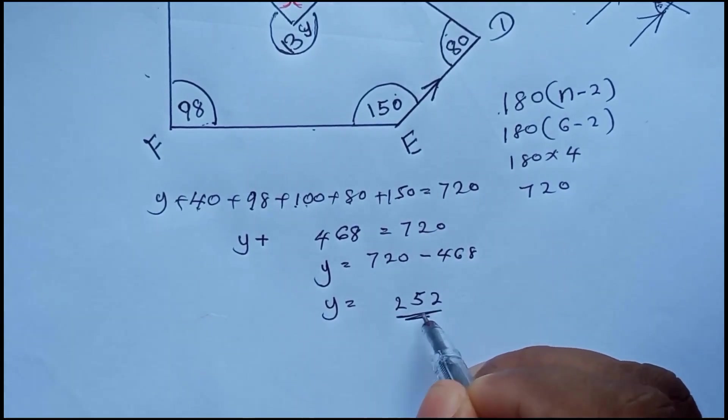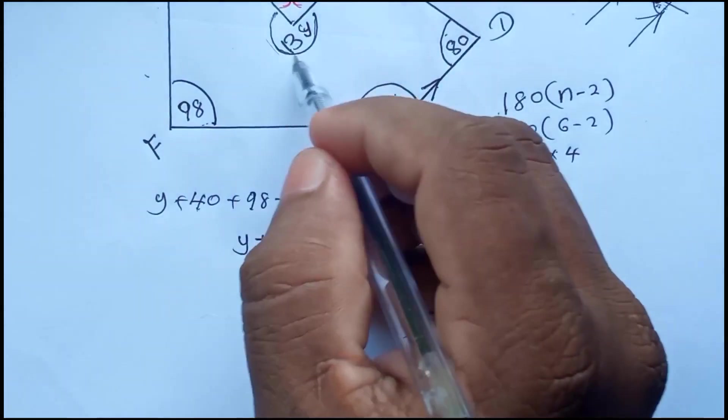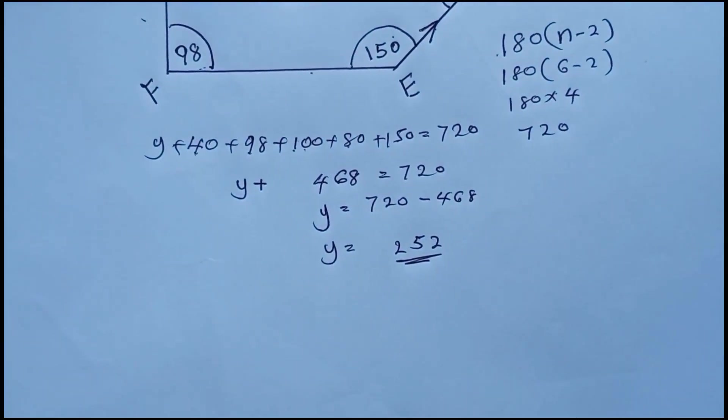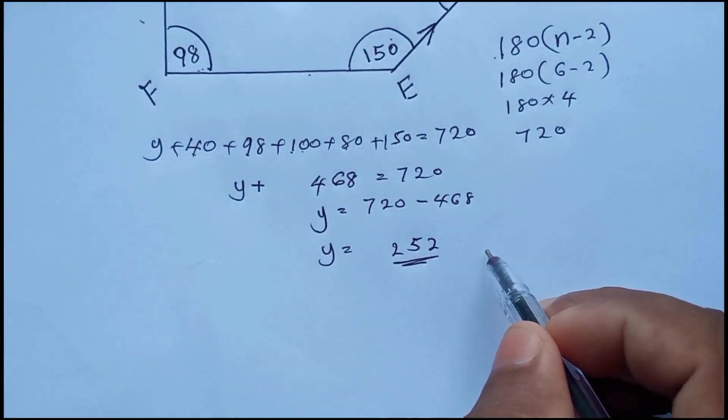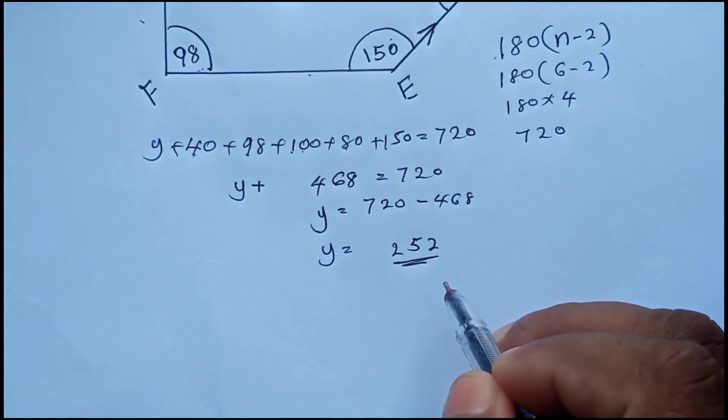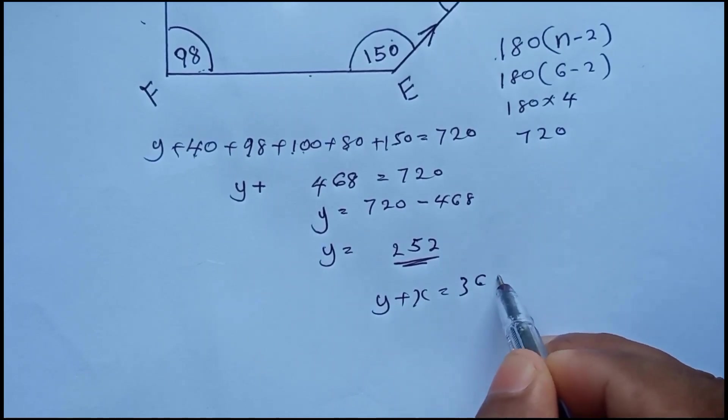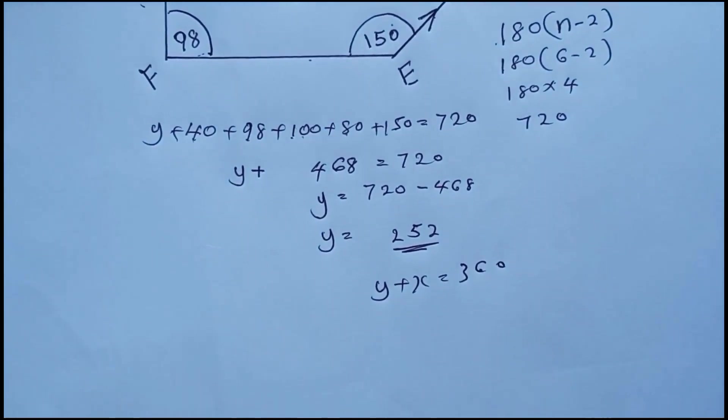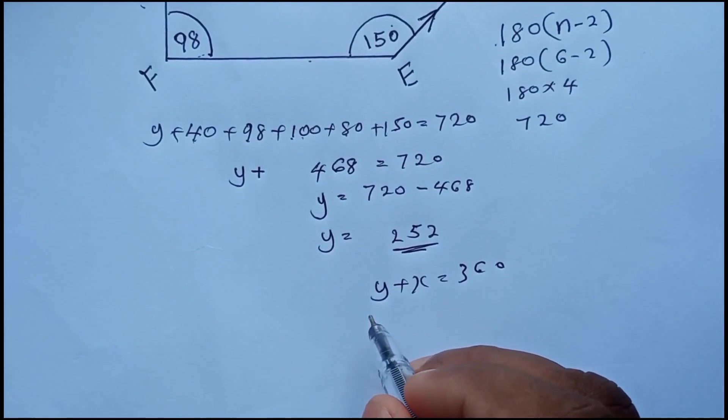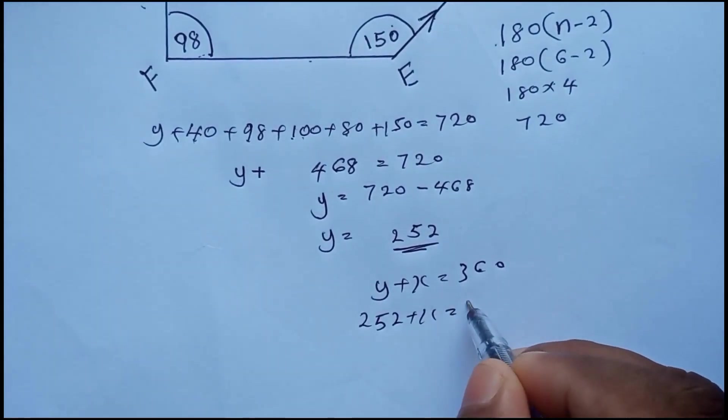So 252. Y equals 252. Now to get x, very simple. You can write y plus x should be 360, you know right? So y is 252, 252 plus x equals 360.